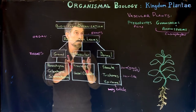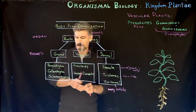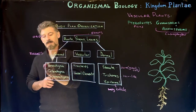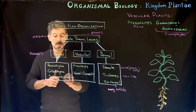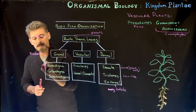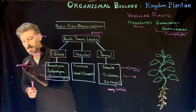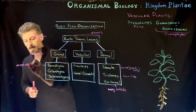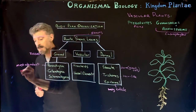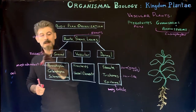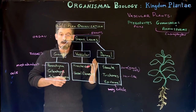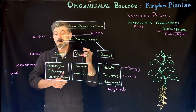Ground tissue is made up of what's called parenchyma, colenchyma, and sclerenchyma — some interesting names. The parenchyma is the most abundant type of cell. These are the cell types that make up the different tissues, and the parenchyma cells are the photosynthetic cells.